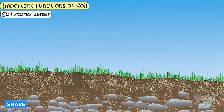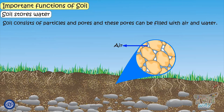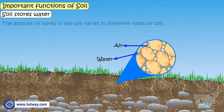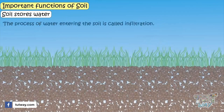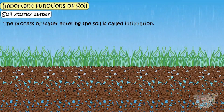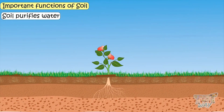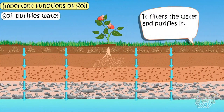Soil also stores water. Soils consist of particles and pores, and these pores can be filled with air but also with water. The amount of pores in a soil differs for different types of soil. The process of water entering the soil is called infiltration. When the soil has taken up all the water it can, we say that it is saturated.